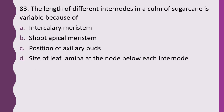Question 83. The length of different internodes in a culm of sugarcane are variable because of: intercalary meristem, shoot apical meristem, position of axillary buds, or size of leaf lamina at the nodes below each internode. The correct answer is option A, because of the intercalary meristem.